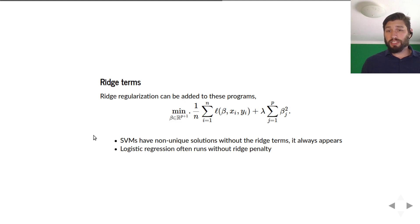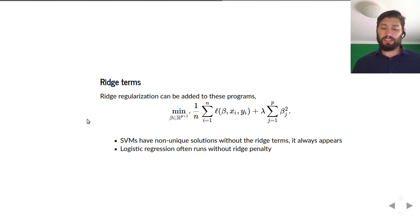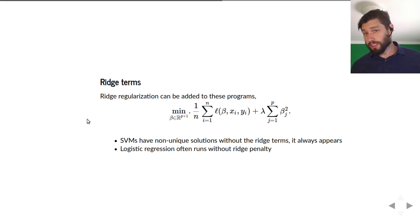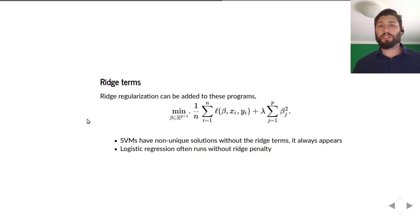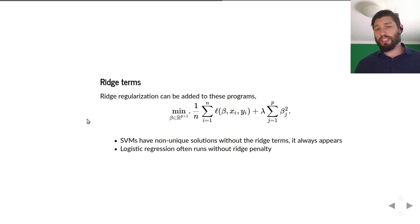Logistic regression often will run without the ridge penalty by default — you can add it in just fine, there's nothing forcing you to not include it. The narrative is just the same as for ordinary least squares: it shrinks the betas towards zero, but doesn't force any to be exactly zero, as happens with the lasso.